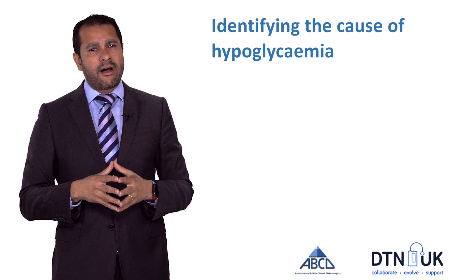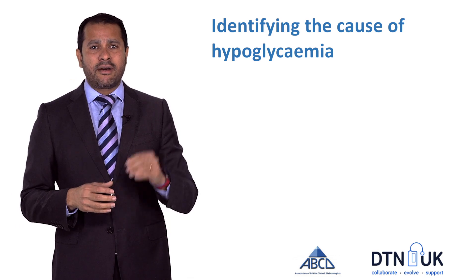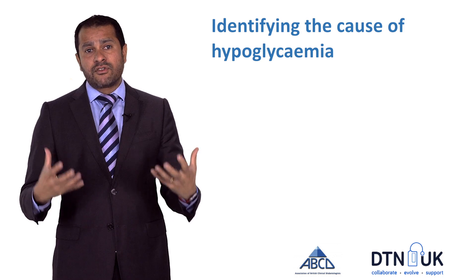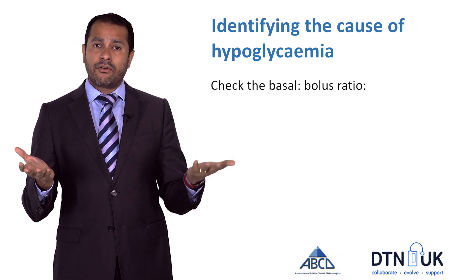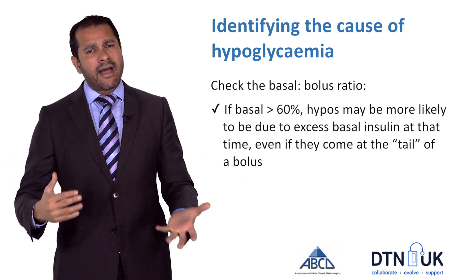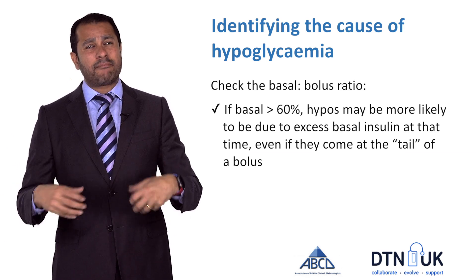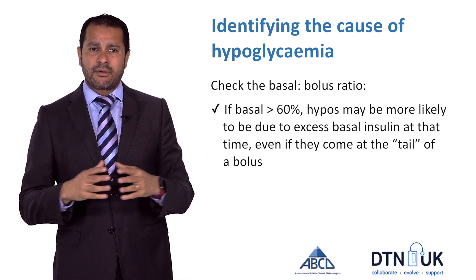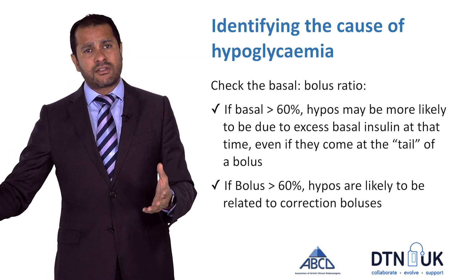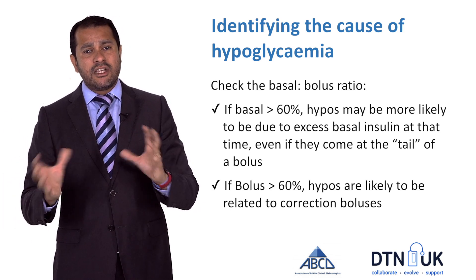Let's talk about how you work out if you've had a hypo or if you've got a pattern of hypoglycemia, and how you might identify the cause. One key thing is looking at the balance between your background or basal insulin and the amount of quick-acting bolus you take. If your background insulin is more than 60% and you're having hypoglycemia, it's probable that it's the background causing it, and you might think about dropping that down. If your bolus is more than 60%, then it's likely you're doing a lot of correction doses that are causing the hypoglycemia.